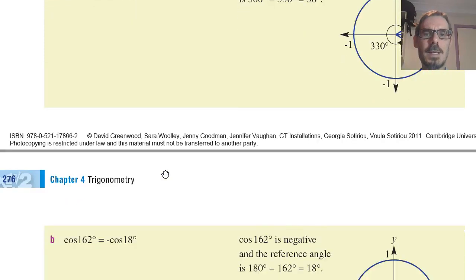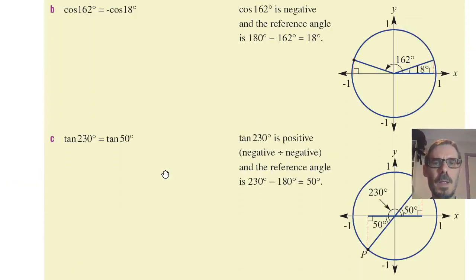The next one was cosine 162. Cosine 162. Well, 162 is over here. Its reference angle is this small angle here, which is actually 18 degrees.